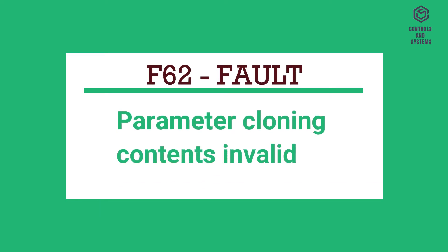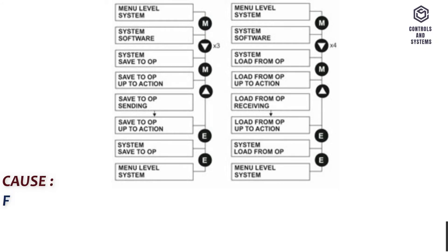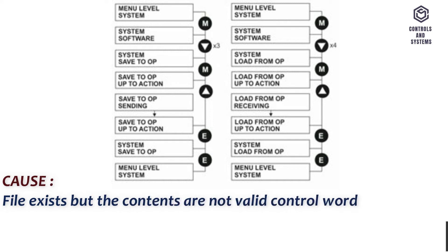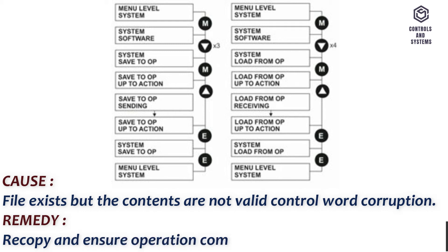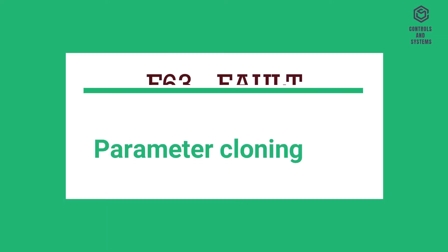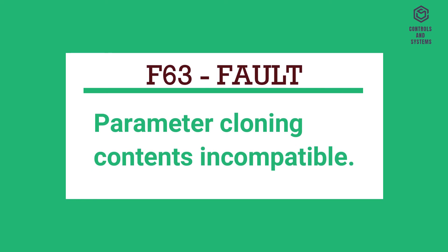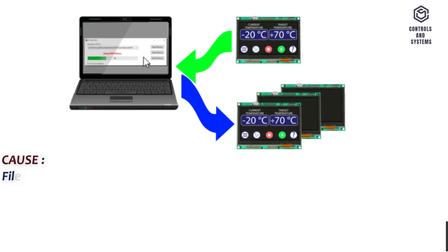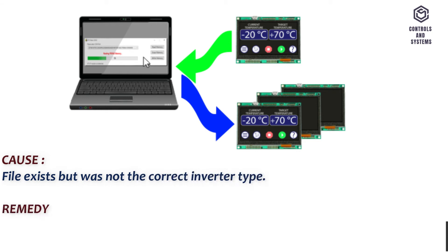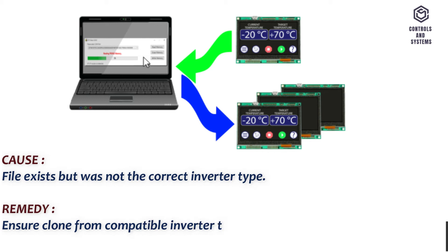F62 Fault: Parameter cloning contents invalid. Cause: File exists but the contents are not valid — control word corruption. Remedy: Recopy and ensure operation completes. F63 Fault: Parameter cloning contents incompatible. Cause: File exists but was not the correct inverter type. Remedy: Ensure clone is from a compatible inverter type.